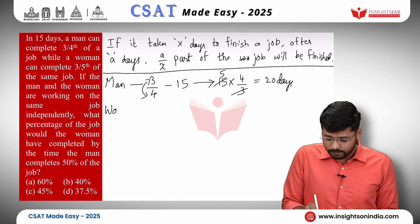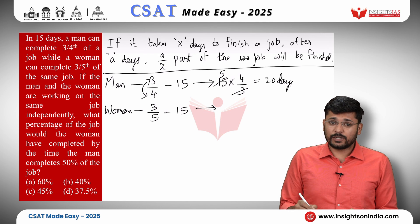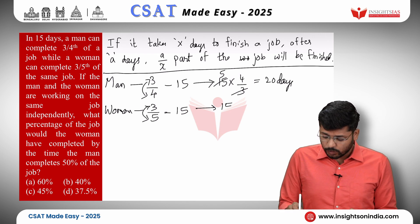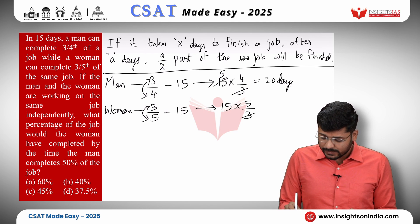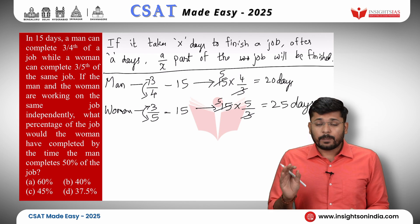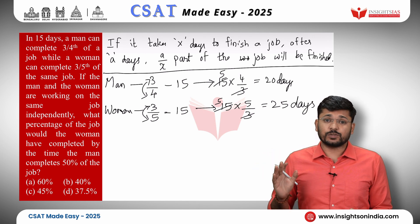For the woman: she does three-fifth of the work in 15 days. Inversing 3/5 gives 5/3. Multiplying 15 by 5/3 — since 3 divides 15 giving 5 — we get 5 times 5 = 25 days. So the man takes 20 days and the woman takes 25 days to finish the work.